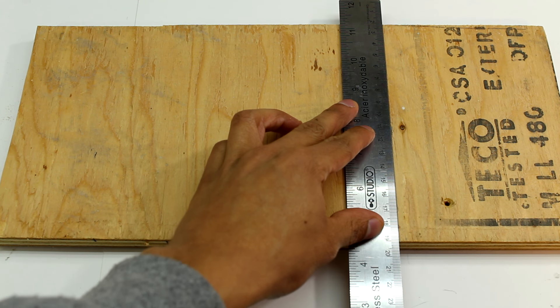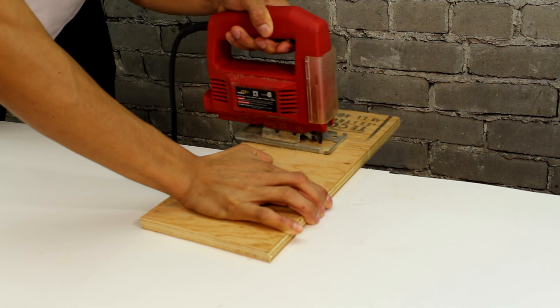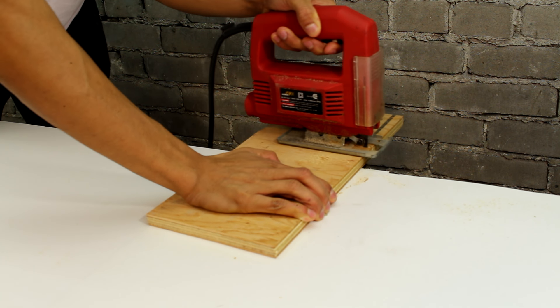To start off, we need a piece of plywood for our base. The size of the plywood really depends on the size of the game you want, so I go ahead and measure mine out and then cut it out.